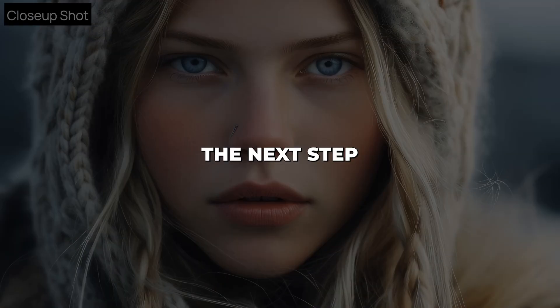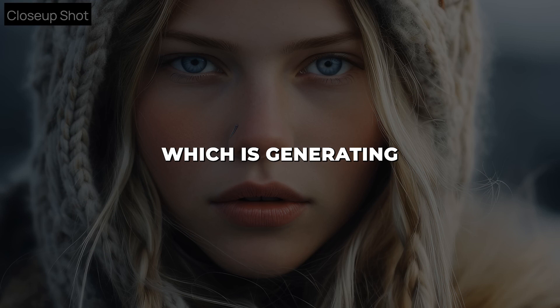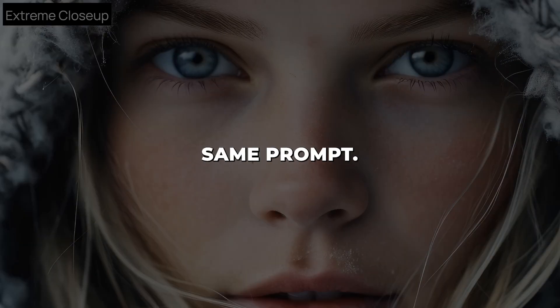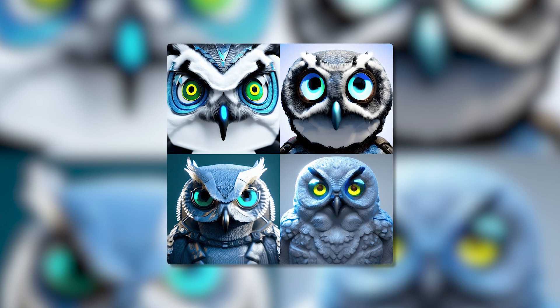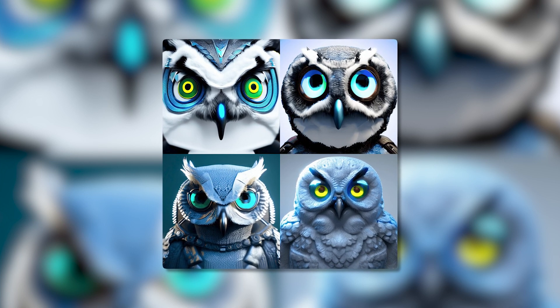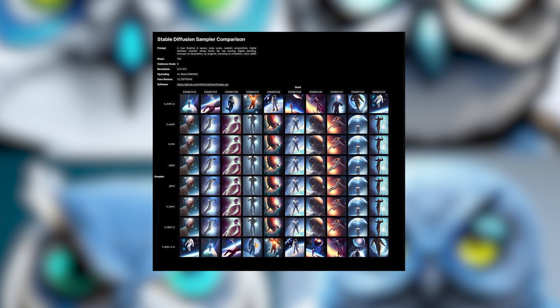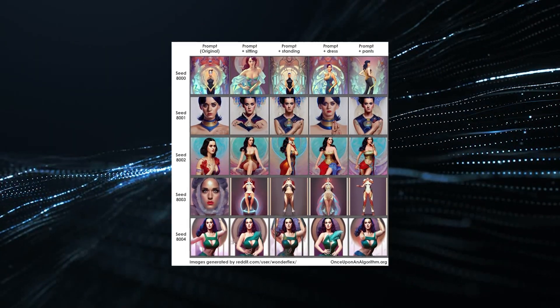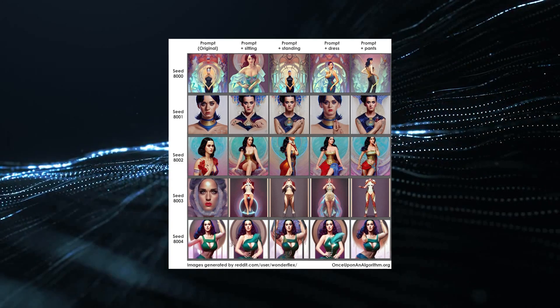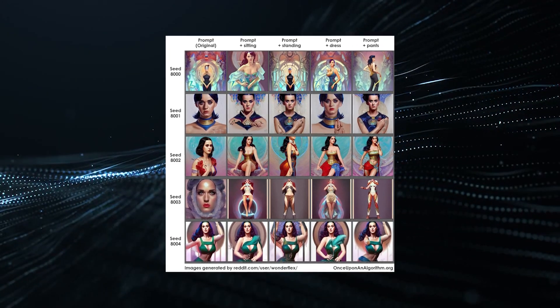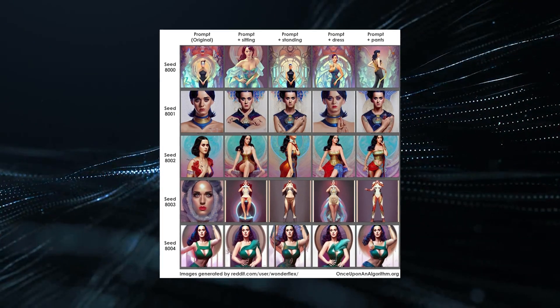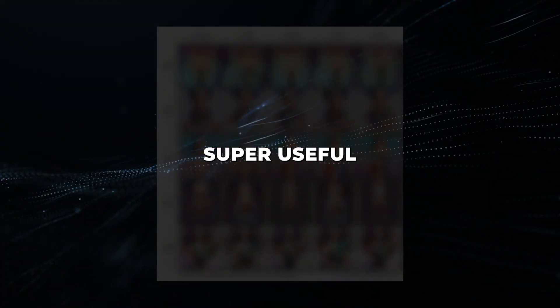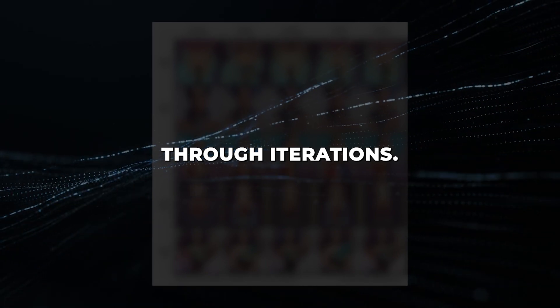Once you have a solid prompt, the next step is sampling, which is generating multiple images from the same prompt. Sampling allows you to pick the best output since the AI will produce varied interpretations. To sample, you simply regenerate the image multiple times. One powerful technique with sampling is seeding, which makes your sampling deterministic, so you get consistent batches of images each time rather than completely random ones. Seeding is super useful for honing in on your ideal image through iterations.